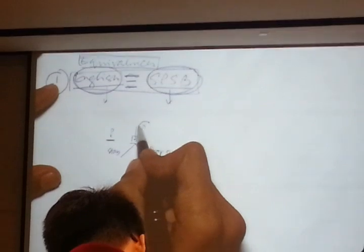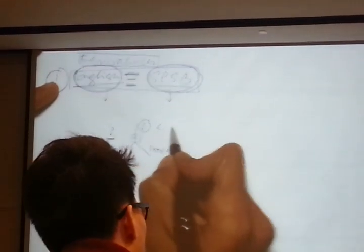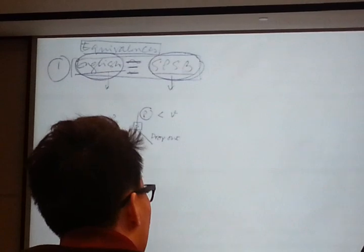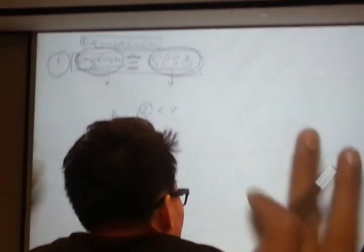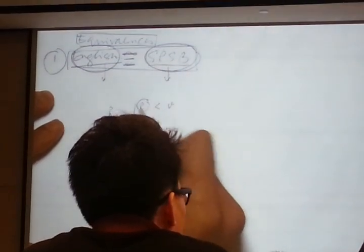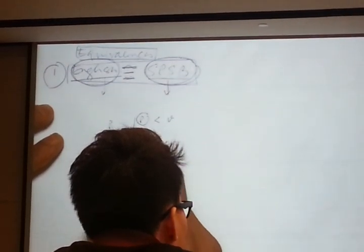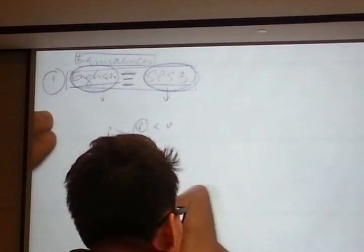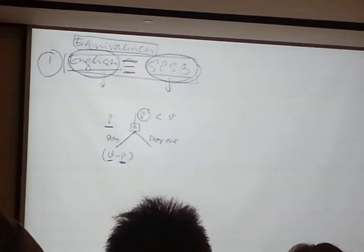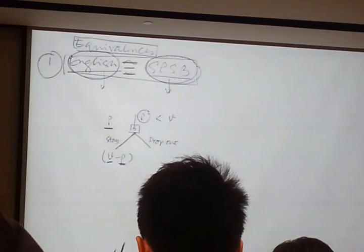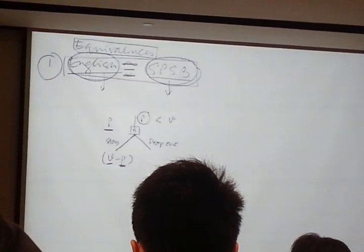You value the sunglasses at a hundred dollars. The price is now only twenty dollars. If you stay in the auction, it is quite likely that you will drop out before the price reaches a hundred dollars, in which case your payoff will be V minus P — your valuation minus the price — which is some positive amount. Your valuation is a hundred dollars and the price is now twenty. If you stay in the auction, there is some positive probability that you will make a positive payoff. There is a chance that everyone else will drop out and you will be the only one left.